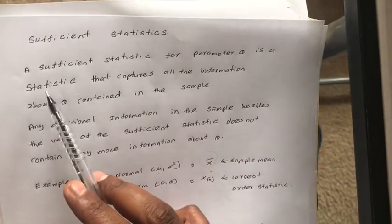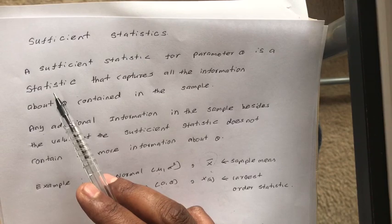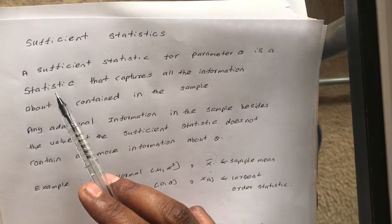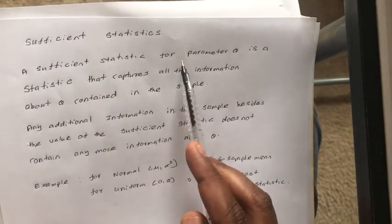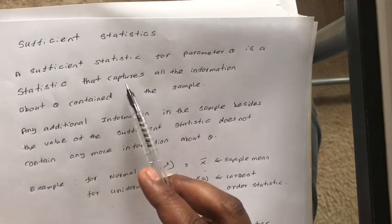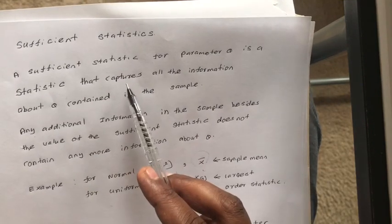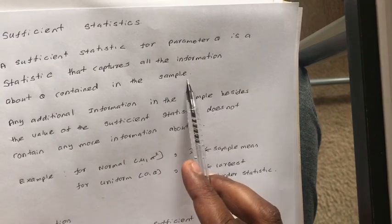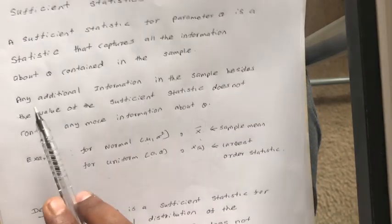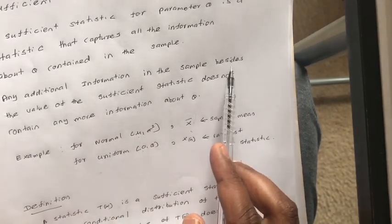When you consider a brief explanation about sufficient statistics, it is as follows. A sufficient statistic for parameter theta is a statistic that captures all the information about theta contained in the sample. Any additional information in the sample besides the value of the sufficient statistic does not contain any more information about theta.